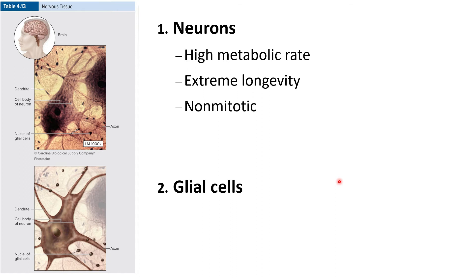That's one of the reasons brain injuries can be so traumatic — because those neurons can't easily be replaced. Neurons are excitable; they respond to a stimulus when exposed to either a chemical signal, a stretch, or some type of change in pressure. They also exhibit conductivity, which occurs when an electrical charge is propagated along the plasma membrane.